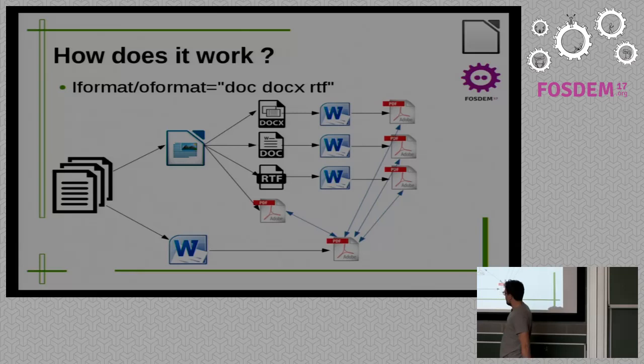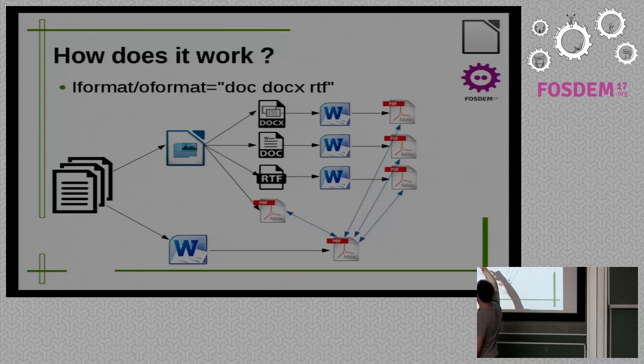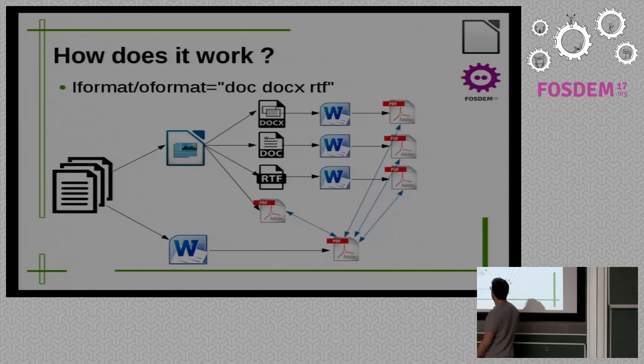Basically, how this tool works. We have these batch of documents here. Let's say these documents are the input format - doc, docx, and rtf. What we do is we convert it with LibreOffice to PDF, so we see how it's imported into LibreOffice. And also we define the output format - doc, docx, and rtf. Then we convert it with LibreOffice to those formats as well. And then from those formats, we open them in Microsoft Office because it's the tool we want to compare it against.